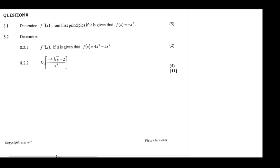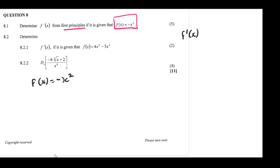Let's solve this problem. For 8.1, we are asked to find the derivative using first principles of f(x) = -x². The formula for first principles is: the limit as h approaches 0 of f(x+h) minus f(x), all over h.